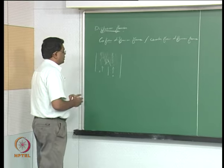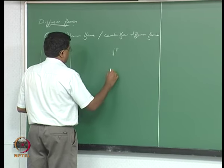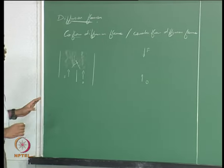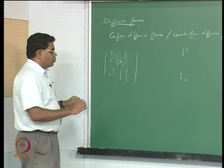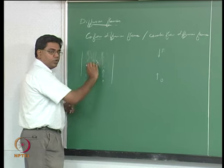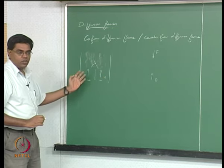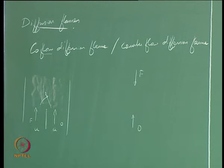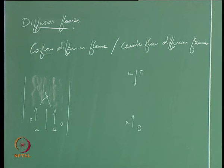A counter-flow situation is where fuel comes in from one direction and oxidizer from the opposite direction. If you want to avoid shear layer effects in the co-flow case, you set equal velocities for both fuel and oxidizer — both entering at velocity U. This way there is no shear layer between them, and you focus mainly on species mixing rather than momentum mixing. Similarly, you can have a counter-flow at the same velocity.